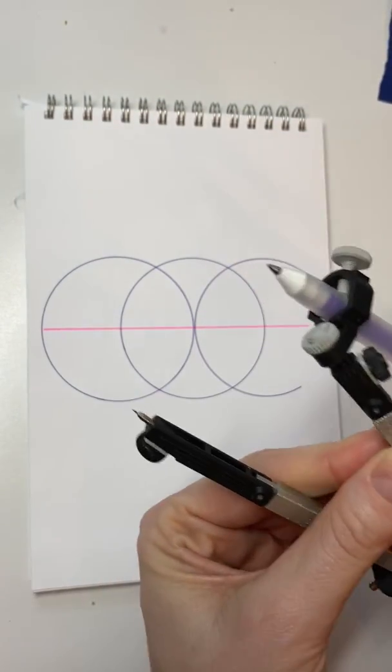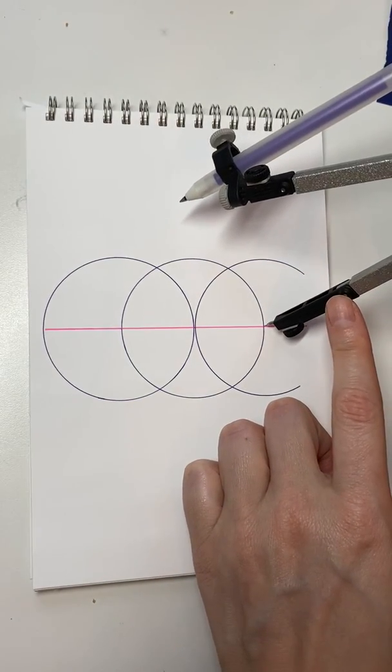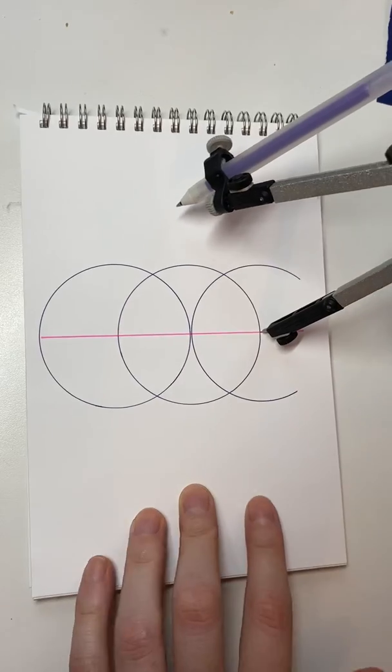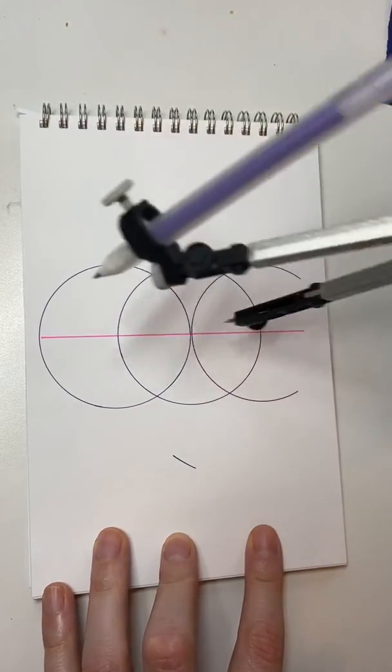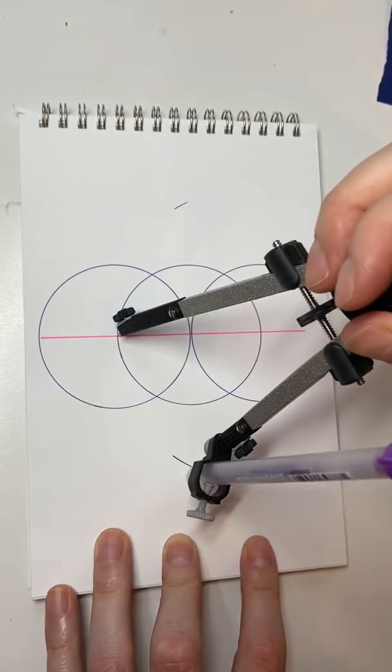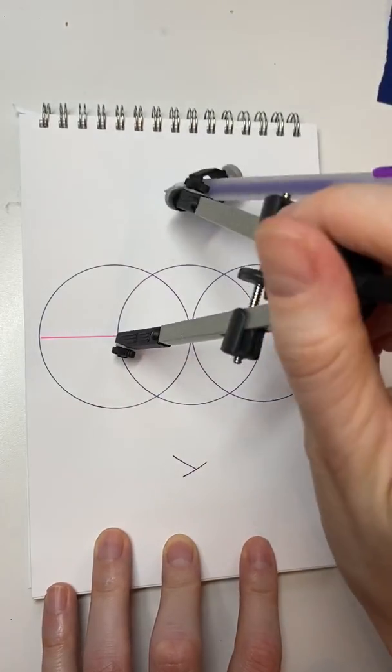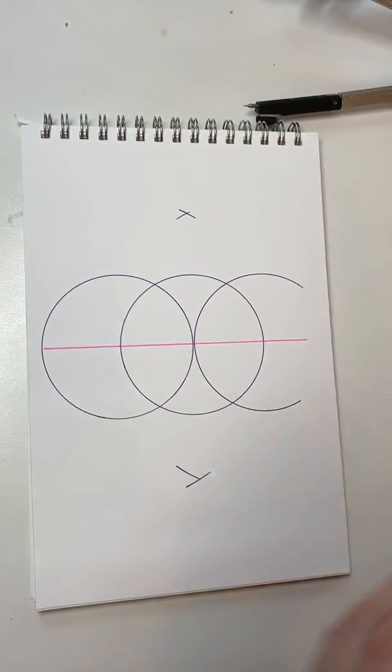Open your compass up real wide and then placing the point here where the pink and purple meet of that original circle, make little marks. We're going to get a perpendicular bisector here and then you're going to connect those marks.